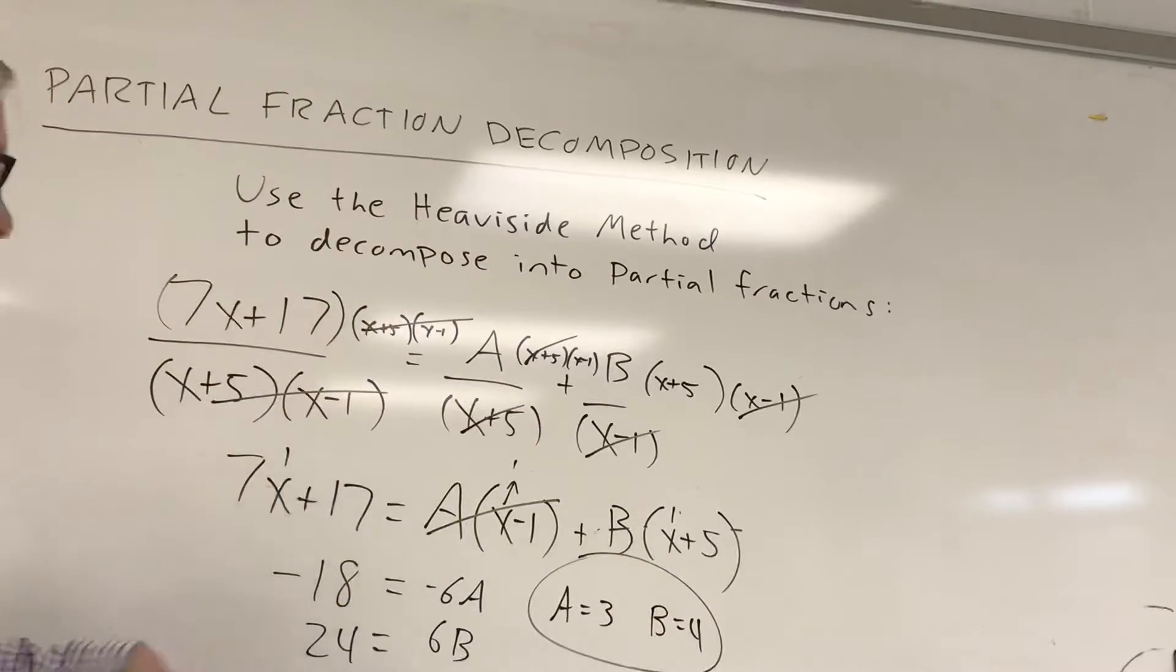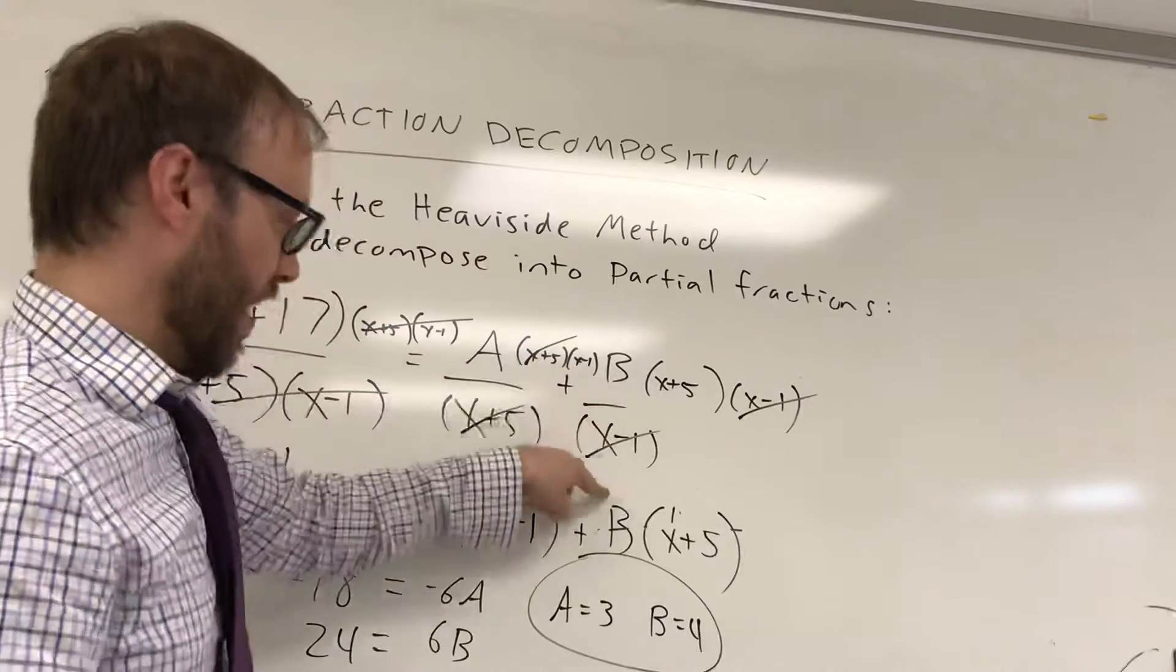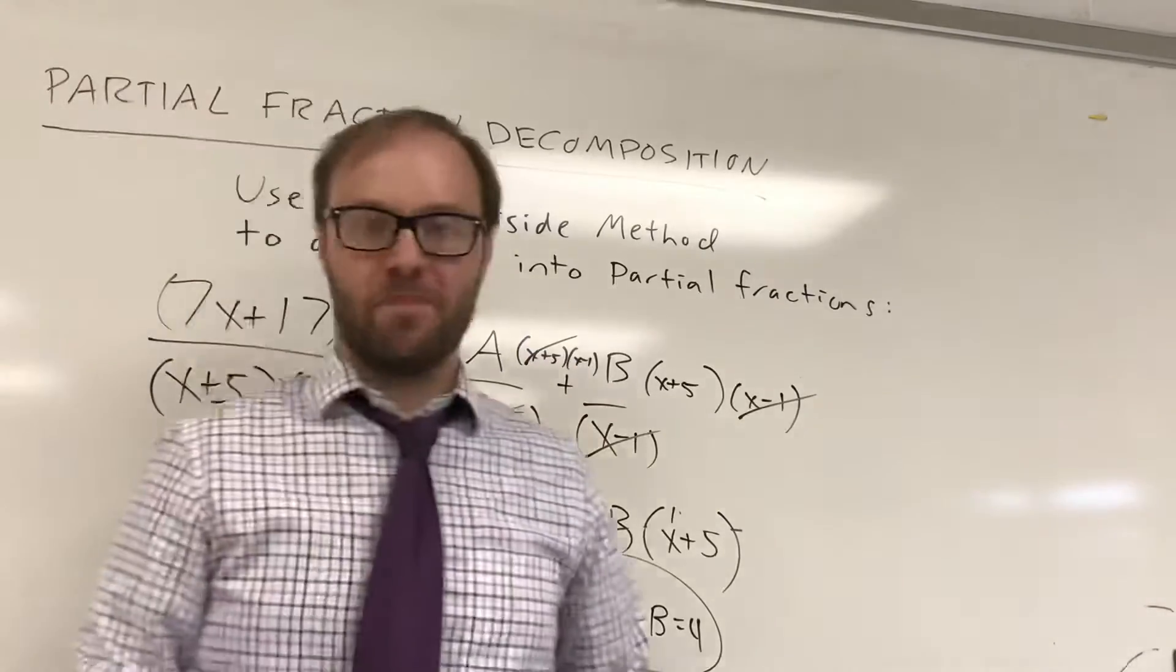And so my partial fraction decomposition would be 3 over x plus 5 plus 4 over x minus 1. And we're done.